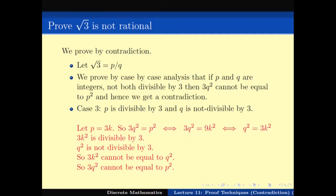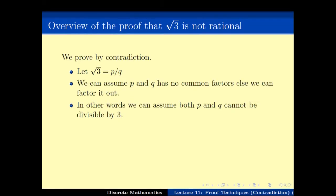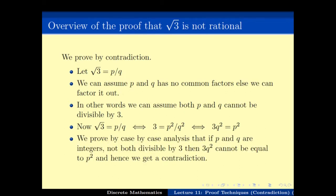Wrapping up the whole proof: we proved by contradiction. We assumed √3 = p/q — the opposite of what we need to prove — and assumed p and q have no common factor of 3, else we can factor it out. Since √3 = p/q means 3q² = p², we did a case-by-case analysis and proved that 3q² cannot equal p² for any integers p and q in all three cases. Hence we get a contradiction. This is an example where we not only apply proof by contradiction but also the case-study proof technique.